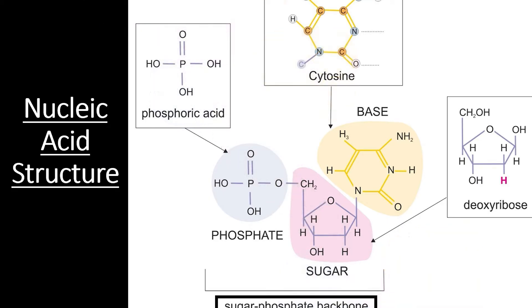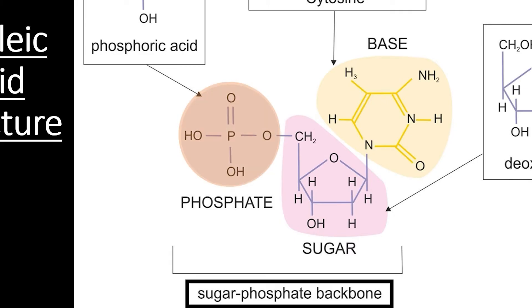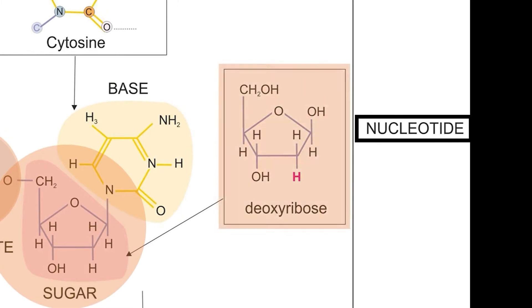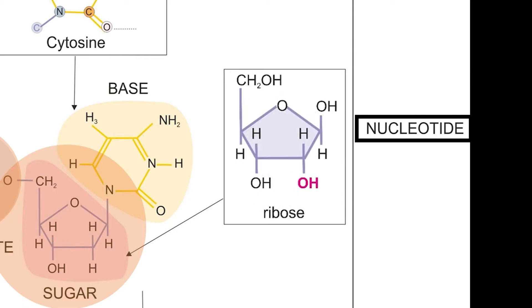No matter how long this sugar-phosphate backbone gets, there will always be a phosphate group exposed on one end and a sugar molecule exposed on the other. The main difference between DNA and RNA lies in the sugar molecule used. DNA uses deoxyribose, while RNA uses ribose — the same sugar with one extra oxygen atom. This tiny difference creates some of the functional differences between DNA and RNA, covered more in section 1.6.